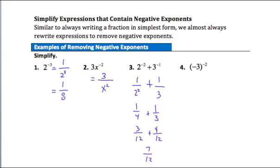Example 4: negative 3 taken to the negative second power. Both the 3 and the negative sign are raised to the negative second power. Remove the negative exponent by writing the reciprocal: 1 over negative 3 to the second power, keeping the parentheses. Negative 3 squared equals positive 9, so the simplified form is 1 ninth.